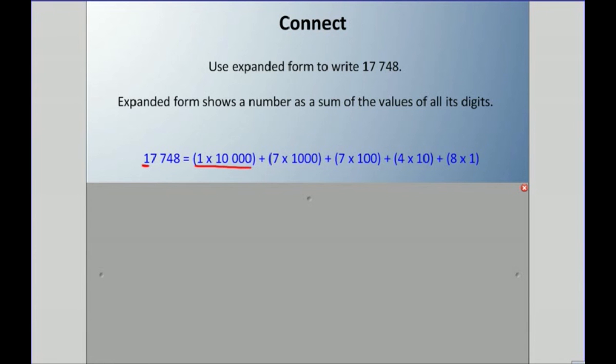For example, the one that's in the 10,000 place, I'm going to do one times 10,000. The seven is in the thousands place, I'm going to multiply that by the thousands place, seven times a thousand. And so when you do this, you would get, you know, 10,000 - one times 10,000 is 10,000, seven times a thousand is 7,000, seven times a hundred is 700, four times ten is 40, and eight times one is 8.